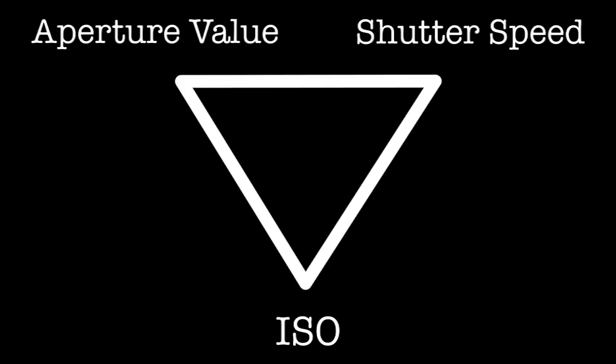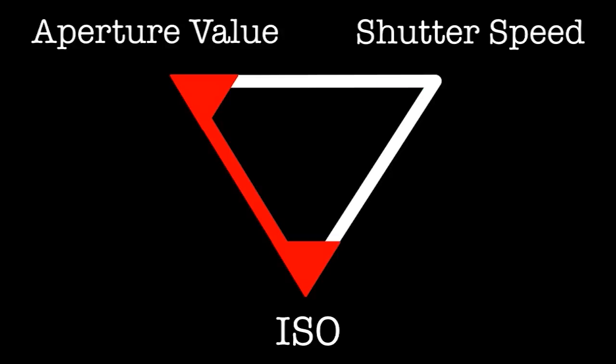Let's begin by talking about the exposure triangle and how it applies to metering. Our camera uses three things to create a proper exposure: the shutter, the aperture, and the ISO setting. These three things make up the exposure triangle, and they work together to give you the correct exposure. With a light meter you enter the ISO and one other part of the exposure triangle, and the meter gives you the third part.